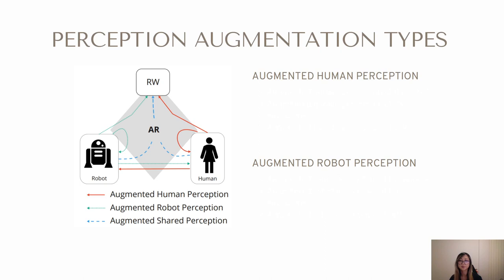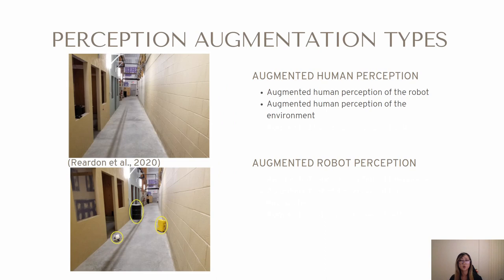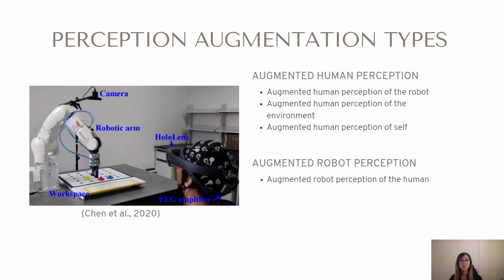AR can be used to modify the perception of the human. In the current context of HRI, this category can be subdivided to accommodate the three entities involved in a typical HRI task: the human, the robot, and the environment. An example of augmented human perception of the robot can involve a robot wheelchair displaying obstacles in the user's desired path to clarify why the planned path must be changed. An example of augmented human perception of the environment is a robot which performs point cloud change detection and visually highlights these changes to the user. AR can also be used to augment the user's self-perception; for example, AR has been used to visualize the user's air-drawn model for a 3D robotic printing task.